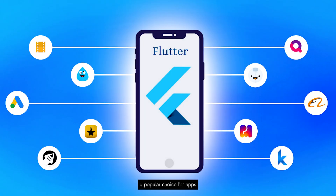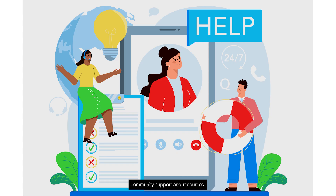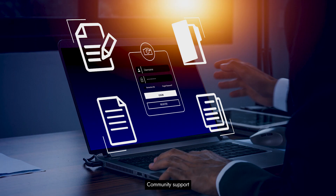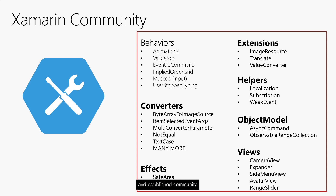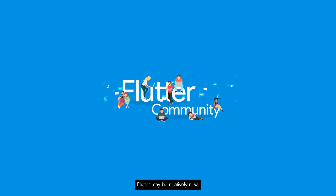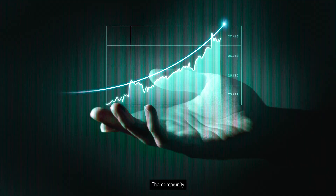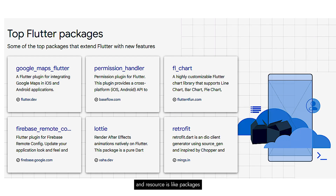This makes Flutter a popular choice for apps that prioritize stunning visuals. Next, let's talk about community support and resources available for Xamarin and Flutter. Community support is vital for developers working with frameworks. Xamarin has a robust and established community. It has been around for a while, and developers can find extensive documentation, tutorials, and helpful plug-ins to enhance their development process. Flutter may be relatively new, but it has gained rapid adoption and has an enthusiastic community. The community actively contributes to its growth, and resources like packages and libraries available on pub.dev make development with Flutter more accessible.